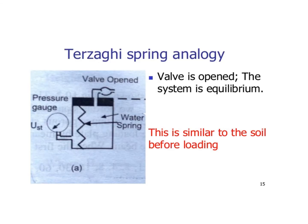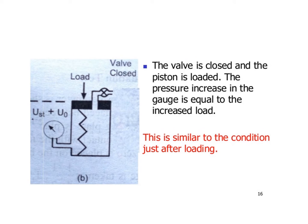In this figure you can see the spring-piston model with the valve open — this is similar to the before-loading condition. When the valve is closed and the piston is loaded, the pressure increase shown on the gauge is equal to the increased load. This is similar to the condition just after loading.